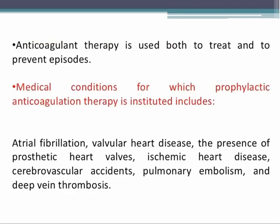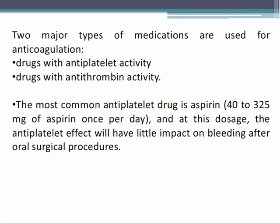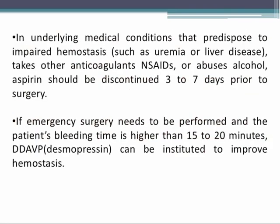Additional indications include pulmonary embolism and deep vein thrombosis. The two major types of anticoagulation medications are drugs with antiplatelet activity and drugs with antithrombin activity. The most commonly used antiplatelet drug is aspirin at doses of 40 to 325 mg once per day; at this dosage the antiplatelet effect has little impact on bleeding after oral surgical procedures, so no modification is required unless there is an underlying condition predisposing to impaired hemostasis — such as uremia or liver disease — or the patient is taking other anticoagulants or alcohol. Aspirin should be discontinued three to seven days prior to surgery if necessary.